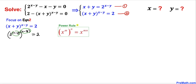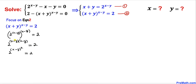Now let's focus on these two nested exponents, x − y and x − y. We are going to use the power rule and multiply out these nested exponents, giving us 2^((x−y)(x−y)) = 2. Then (x−y)(x−y) can be written as (x−y)².